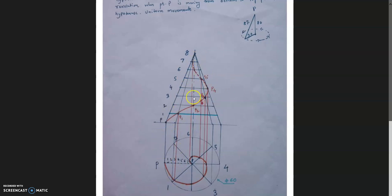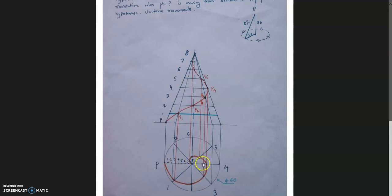To get the curve, take the center point and use the radius to the first division point — draw an arc from the center. This gives point 1. Then take the center and use radius up to point 2 — draw the arc — giving point 2. Repeat for points 3 and 4. Each successive arc uses the next generator division as its radius. Where these arcs intersect horizontal projection lines, you obtain the corresponding curve points, forming a spiral.